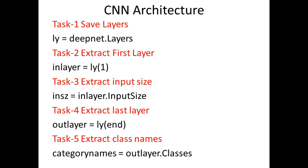Next we will study the CNN architecture. To study the CNN architecture, we first need to load all the layers. To load all the layers, we use deep_net.layers. This loads all 25 layers of AlexNet.